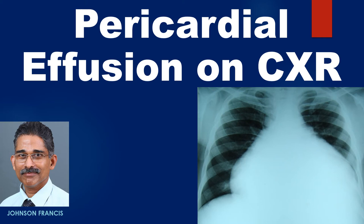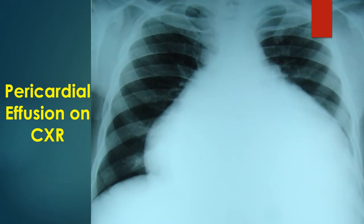Discussion on pericardial effusion including chest X-rays, ECG, and echocardiograms. On chest X-ray, the cardiothoracic ratio is grossly increased due to the large pericardial effusion. In this case, there was underlying severe right ventricular endomyocardial fibrosis as well.